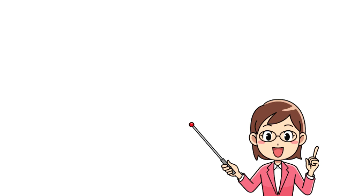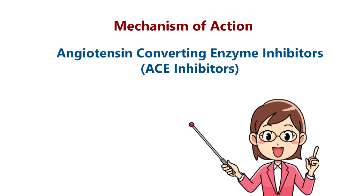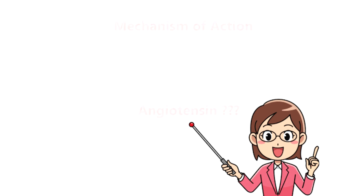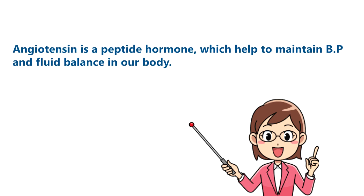Now let's move on to the mechanism of action. First, ACE inhibitors — Angiotensin Converting Enzyme inhibitors. Angiotensin is a peptide hormone which helps to maintain blood pressure and fluid balance in our body.